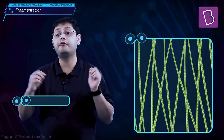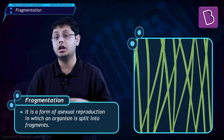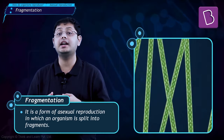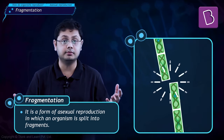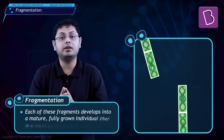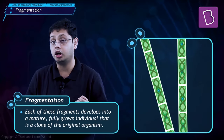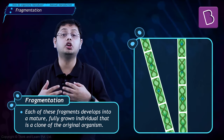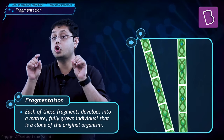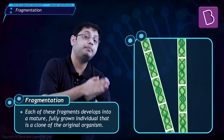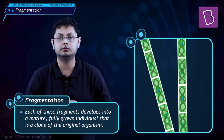Fragmentation is a form of asexual reproduction in which an organism is split into fragments. Each of these fragments develops into a mature, fully grown individual that are clones or exact replicas of the original organism.